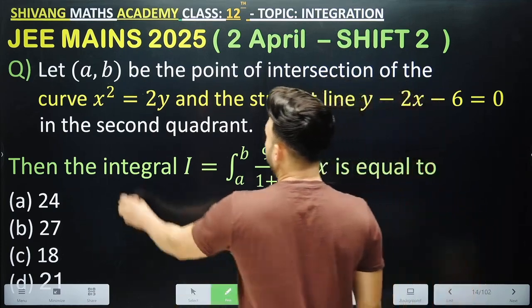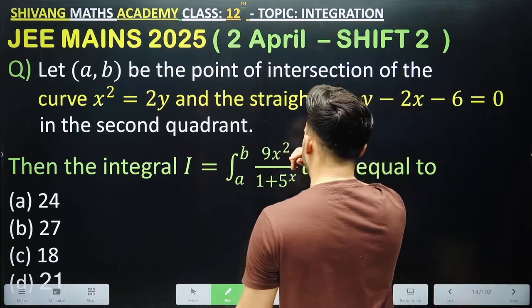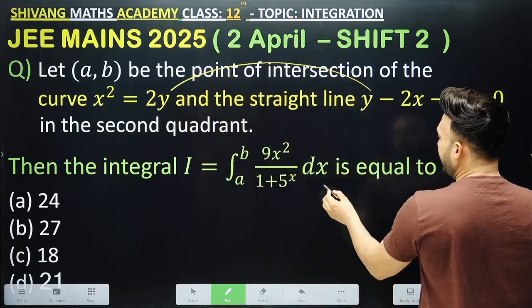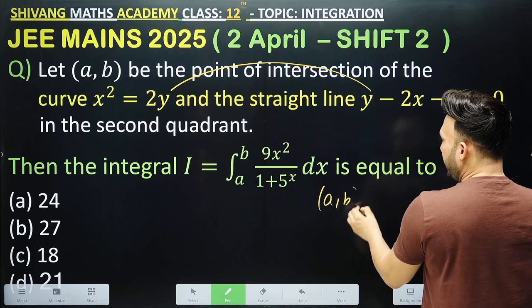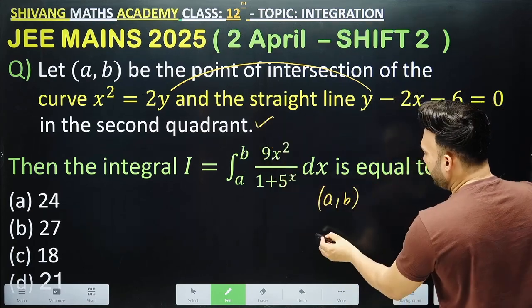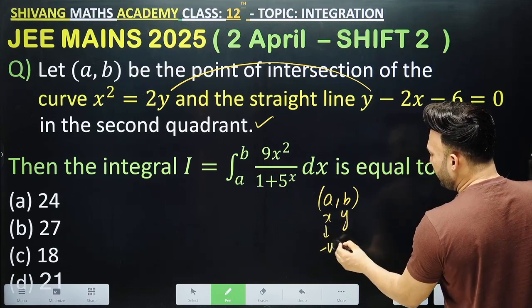Let (a,b) be the point of intersection of the curve x² = 2y and the straight line y - 2x - 6 = 0 in the second quadrant. We need to find the point of intersection between these two curves. In the second quadrant, a is the x-coordinate and b is the y-coordinate, so x is negative and y is positive.